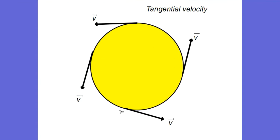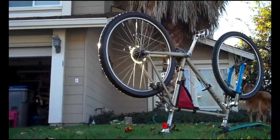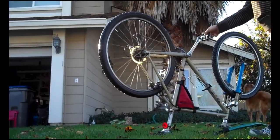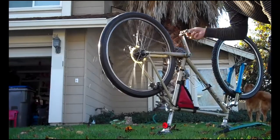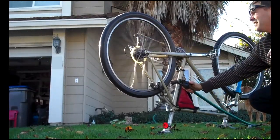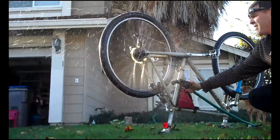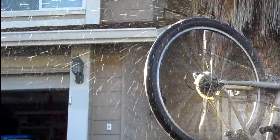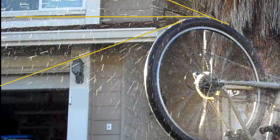I mentioned that if the wall disappeared, people would fly out tangent to the circle. Here's a demonstration: I've turned my bike upside down, spinning the tire, and sprayed water on it. When you freeze-frame the video, you can see the water leaves the tire and flies away in a straight line, tangent to the circle.